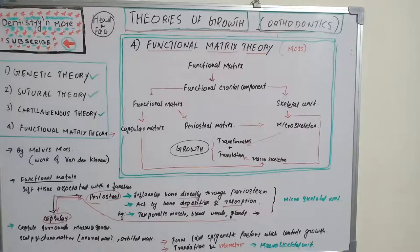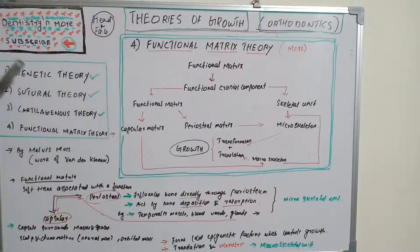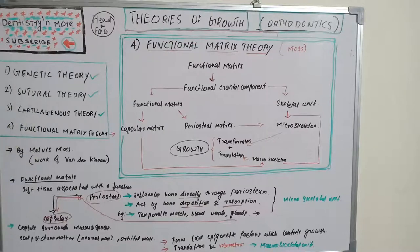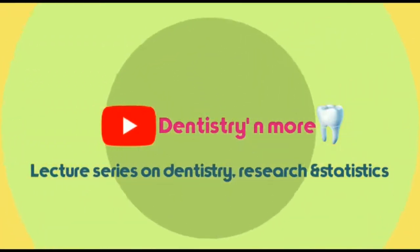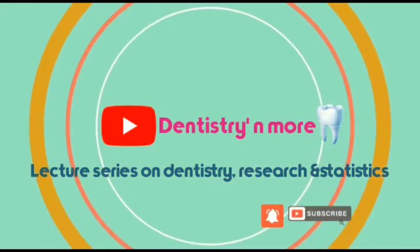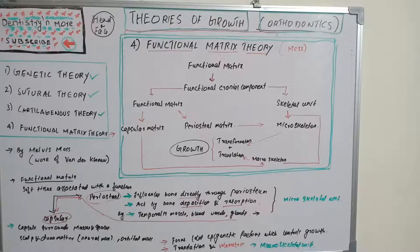Welcome back. The fourth theory in theories of growth is functional matrix theory. Having covered genetic, sutural, and cartilaginous theories, we now move to a different concept — functional matrix theory, which is all about the functional cranial component.